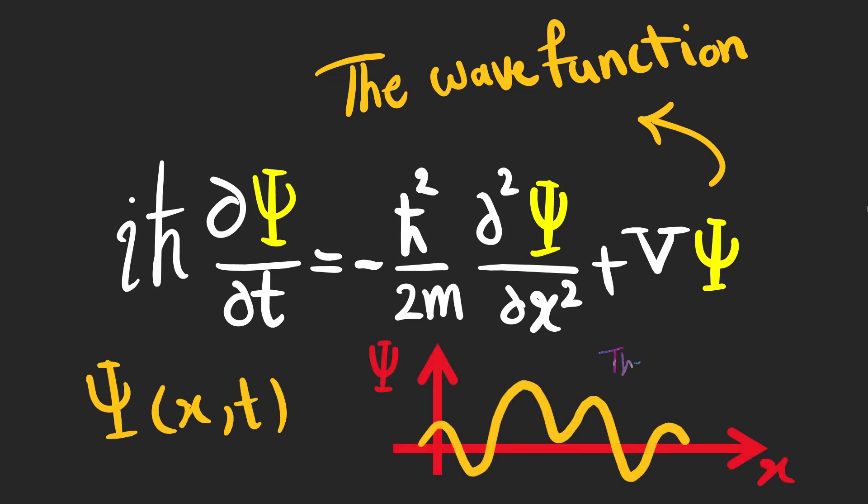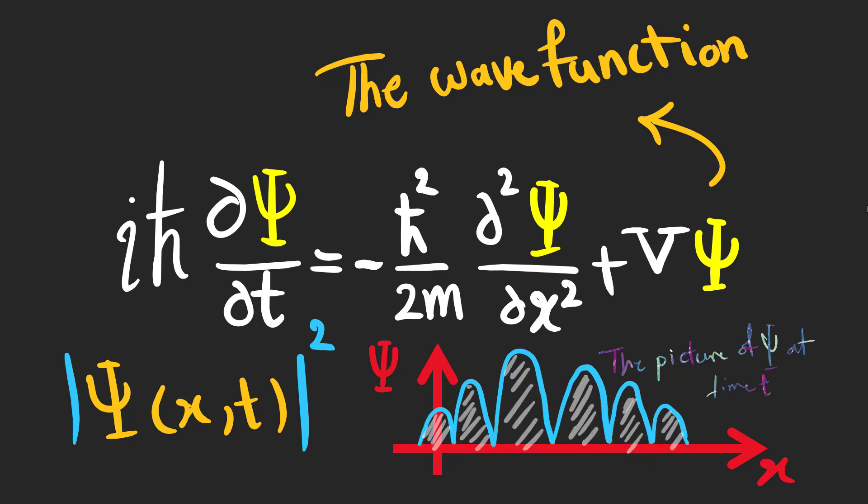This is the picture of the wave function at time t and might change like a wave at later times. Psi squared represents the probability of finding the particle at x at time t. It's very important that the area under the psi squared graph is 1 at any time because the particle should be found somewhere in this space.